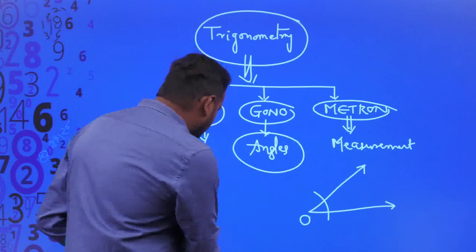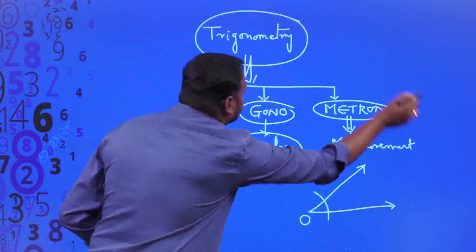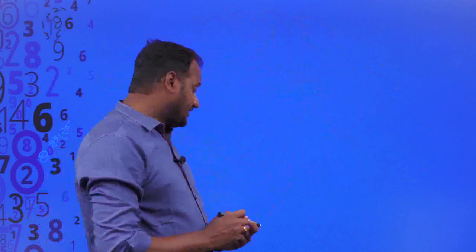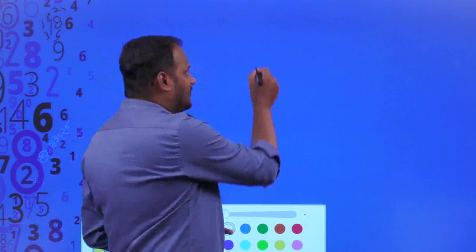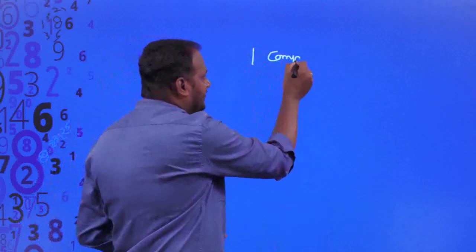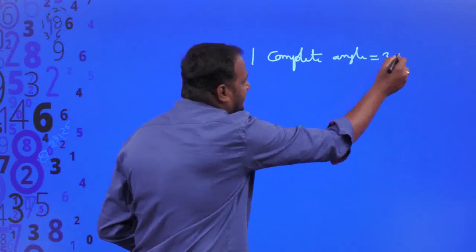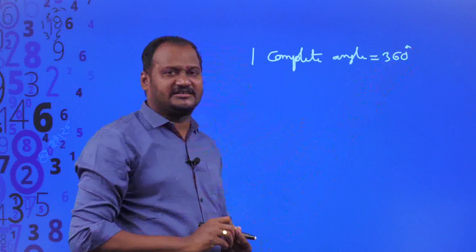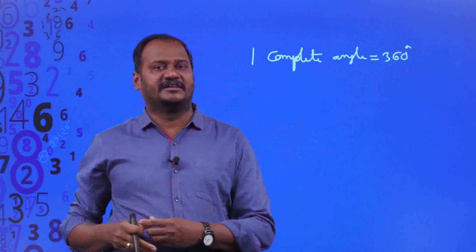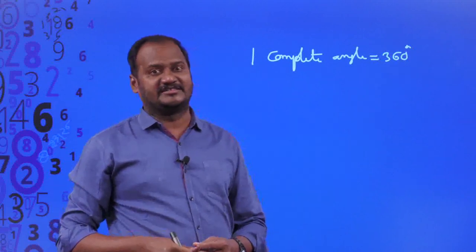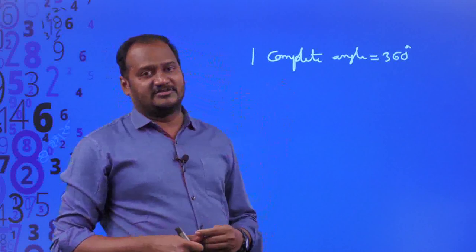You all know about a complete angle. What do we mean by a complete angle? One complete angle is known as 360 degrees. But why 360 degrees — why not 361 or 270 degrees? Why do we call only 360 degrees one complete angle? There is a small history behind why one complete angle equals 360 degrees.